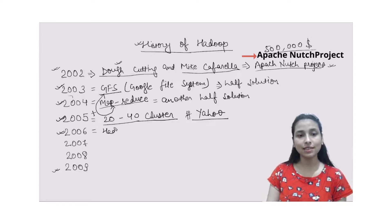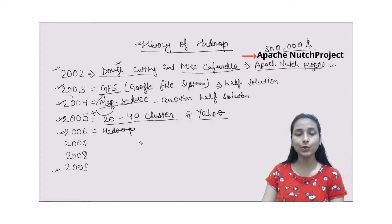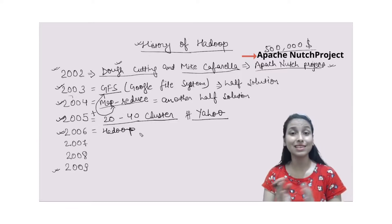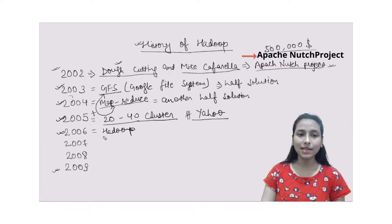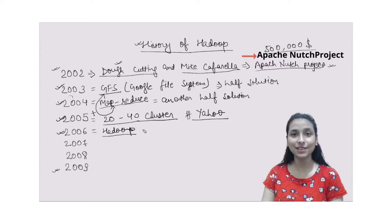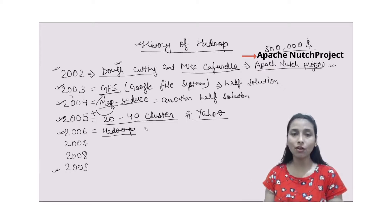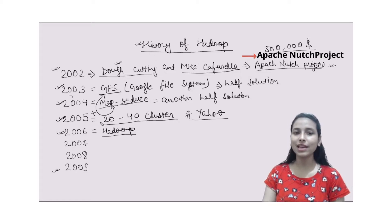That new project was called Hadoop, and in 2006 Hadoop came into existence. He named it Hadoop because he had a child who had a toy stuffed elephant named Hadoop — his son had given that name to the toy elephant. That is why he thought of keeping that project name as Hadoop.